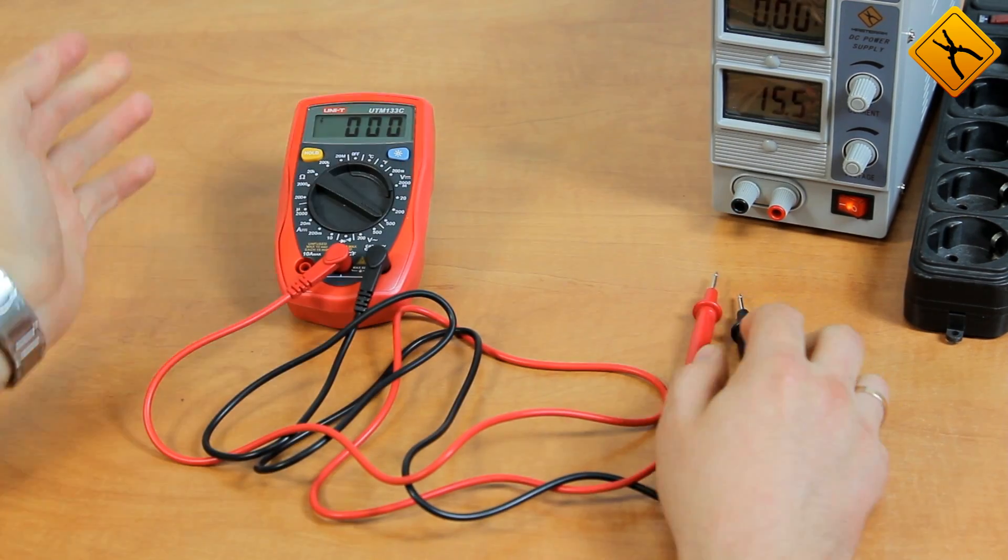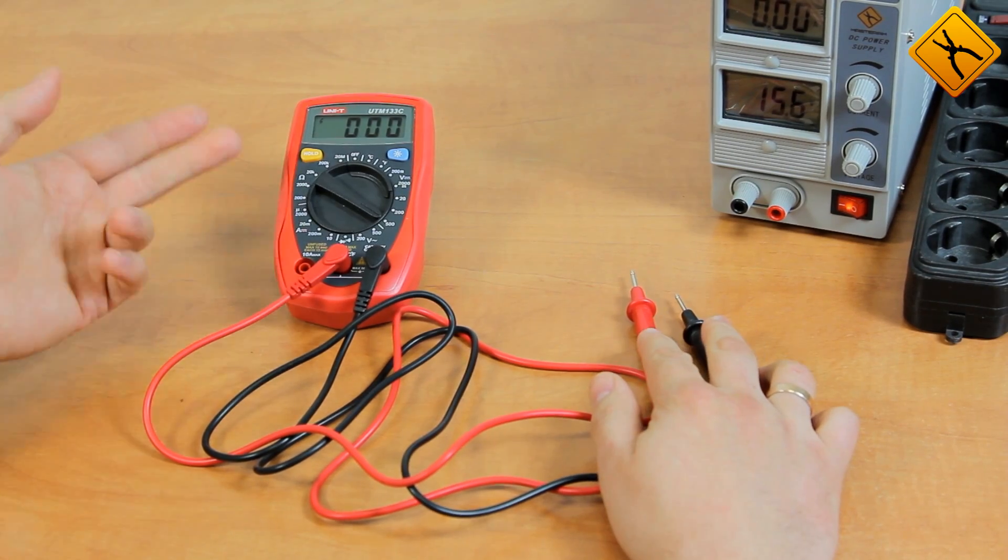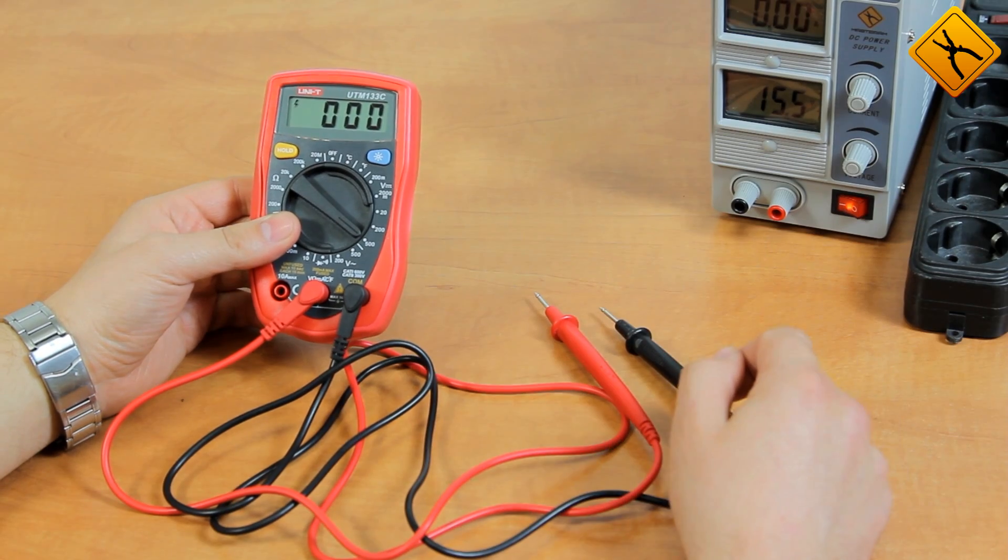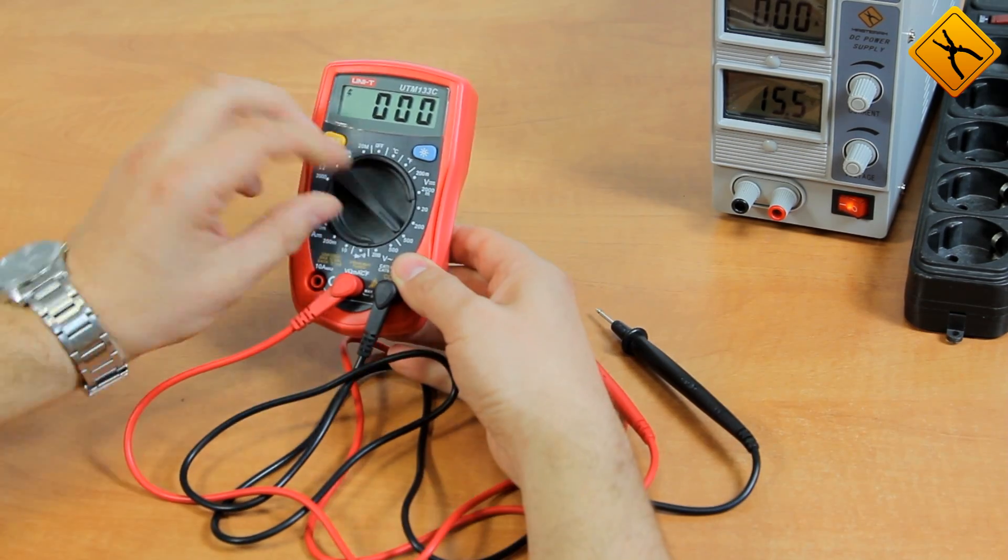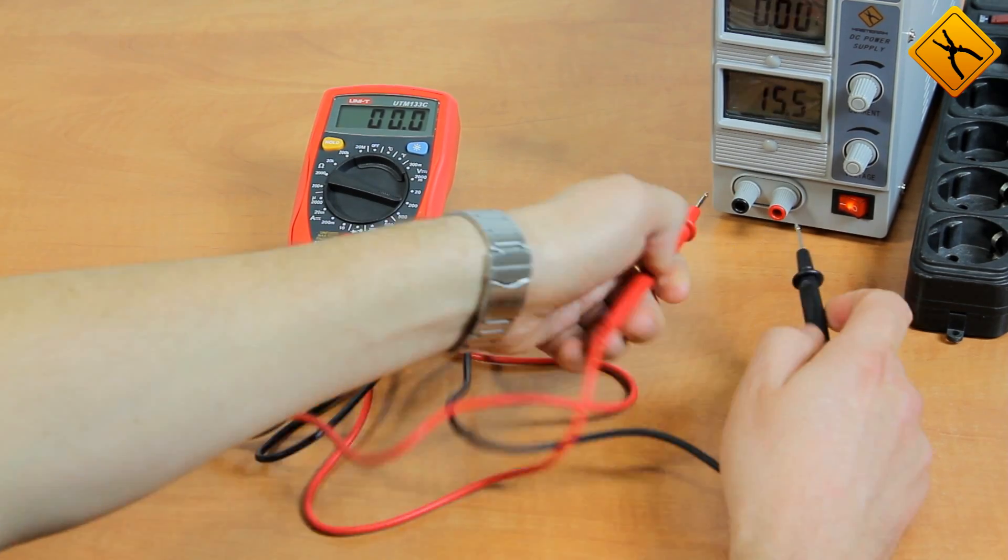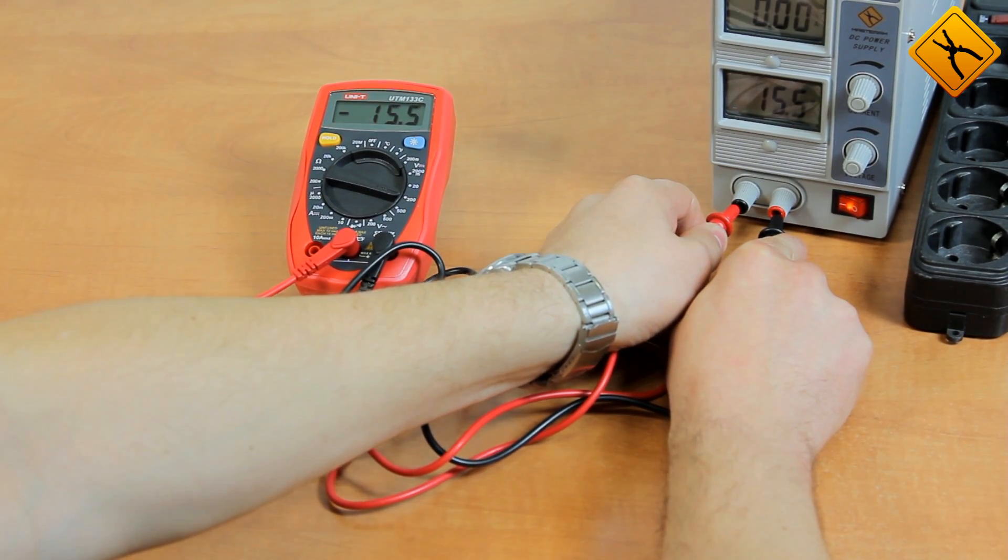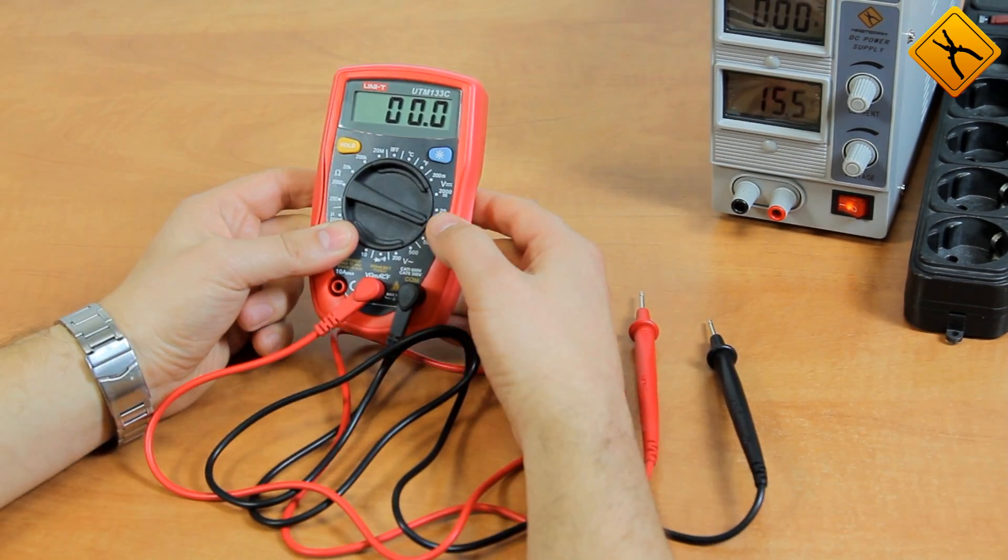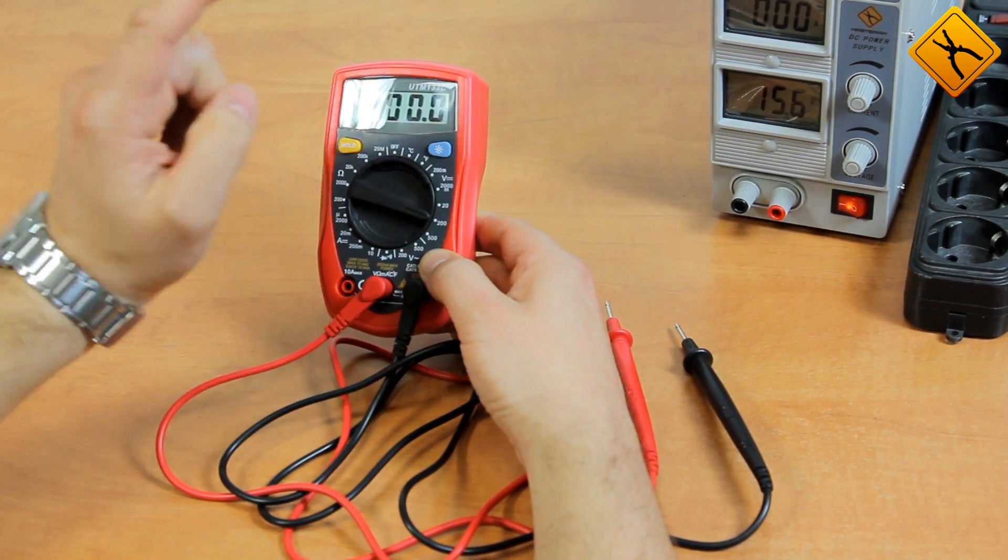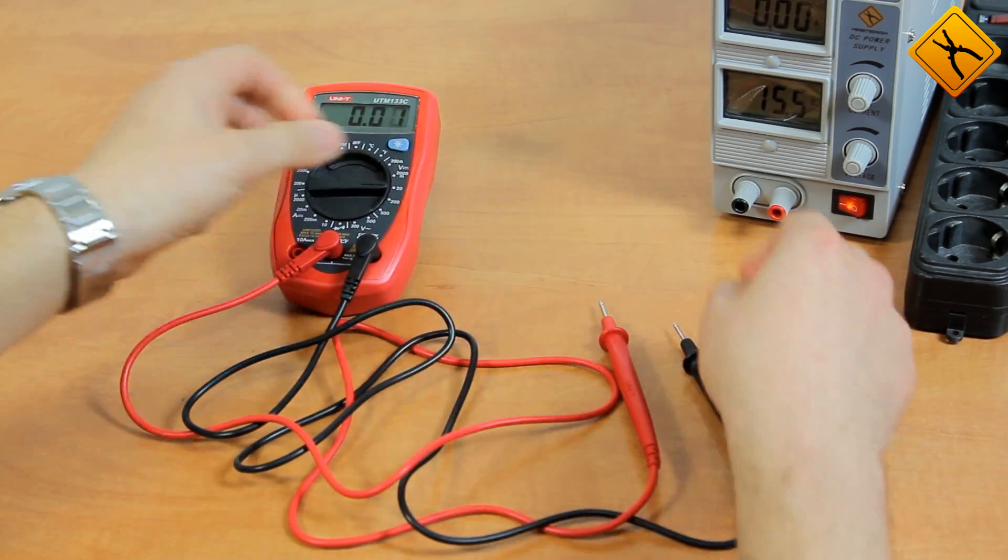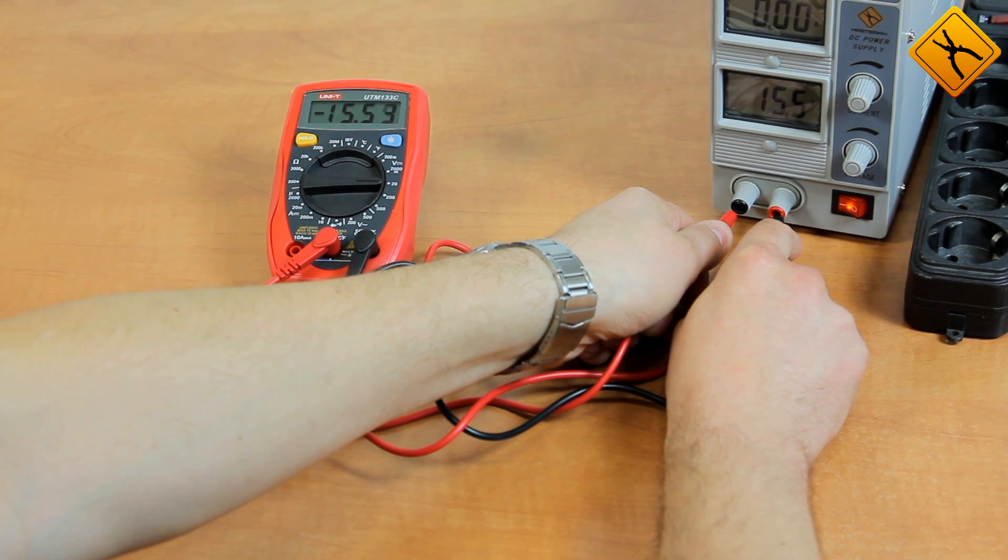So I know the approximate value, but to obtain the more precise value I need to change the measuring range to maximum 200V. It shows 5.5V. I have the possibility to change the range to the maximum of 20V and obtain the more precise value. I've got 15.54V.